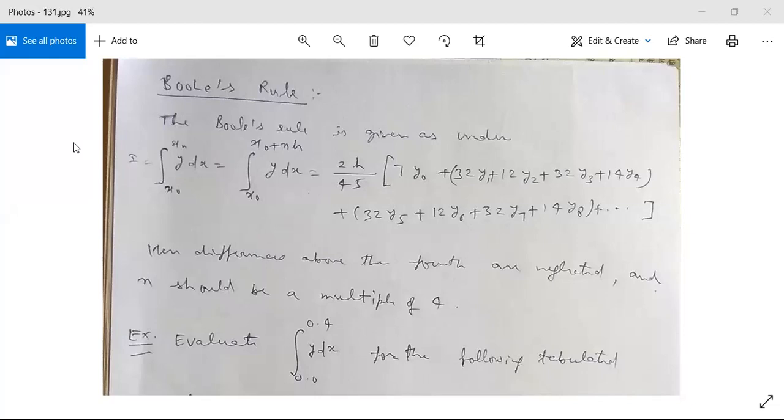After Simpson's 3/8 rule, we are going to see Boole's rule. Boole's rule is given as: the integral I is equal to integration from x₀ to xₙ y dx, and it is written as integration from x₀ to x₀ plus nh, y dx, because xₙ is nothing but x₀ plus nh.